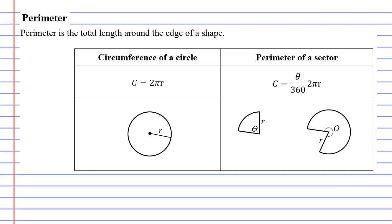Perimeter. Perimeter is the total length around the edge of a shape.